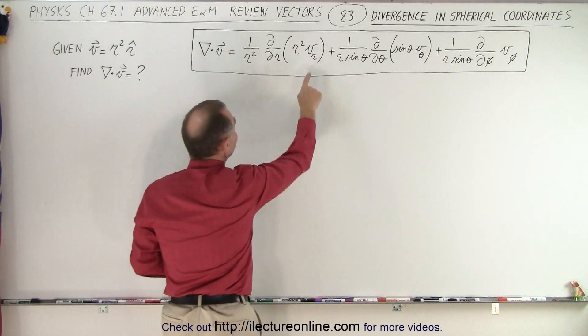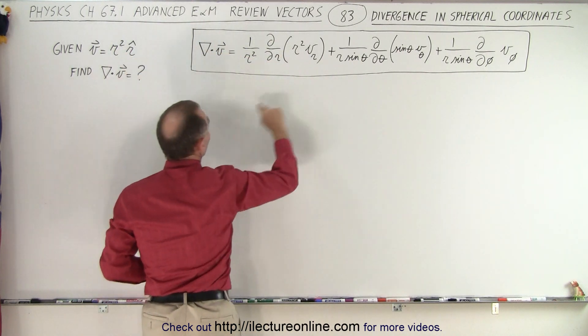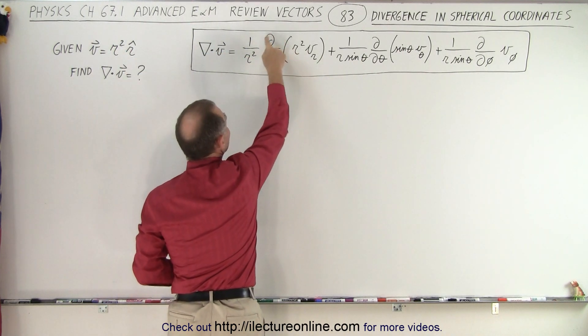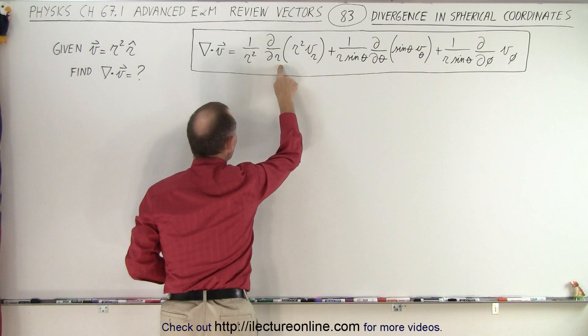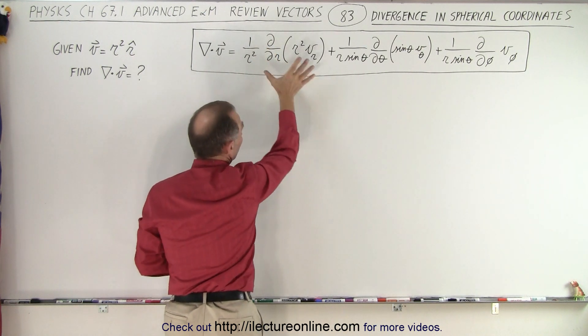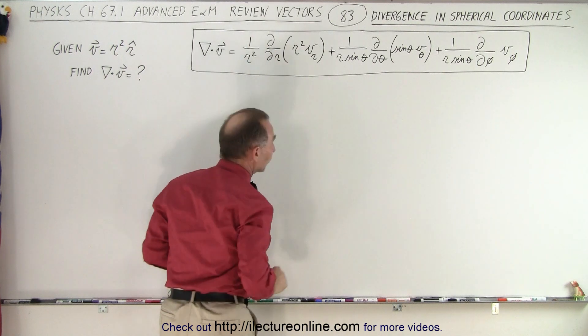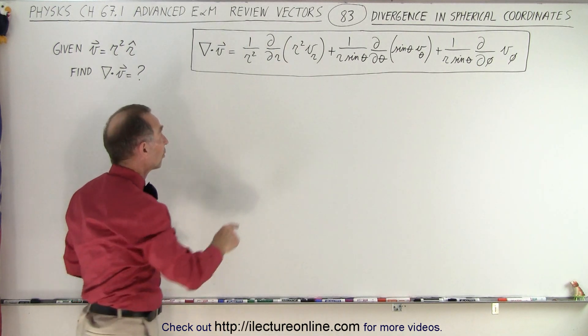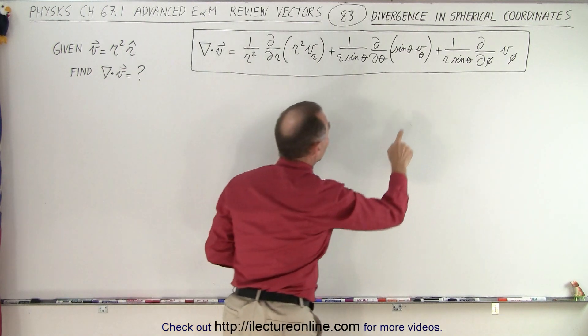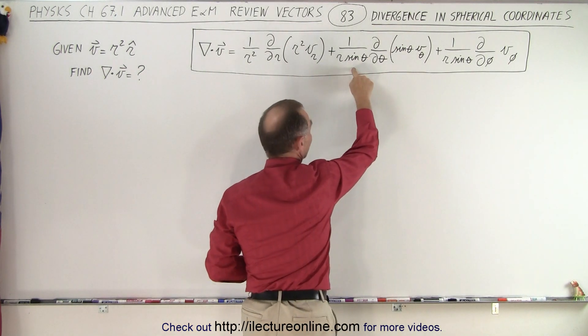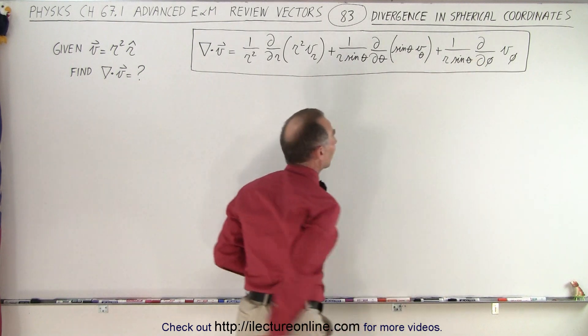What you need to do is take the r component of the vector, multiply it times r², then take the partial derivative with respect to r, and then you multiply it times 1 over r². Whatever the result is of this, you multiply it by 1 over r². So by no means does this r² cancel out with this r². Again, this sine of θ does not cancel out with this sine of θ.